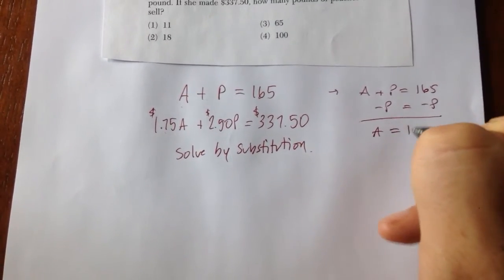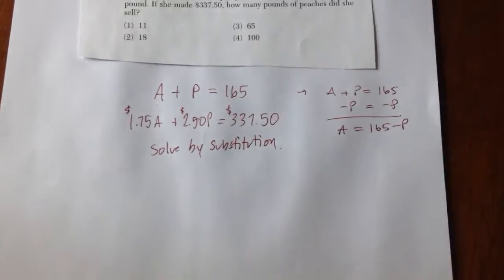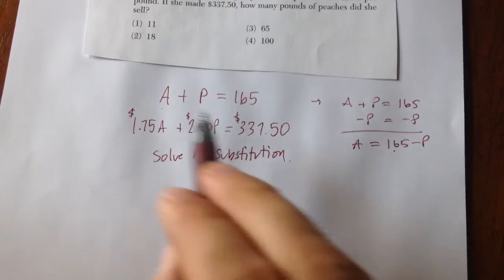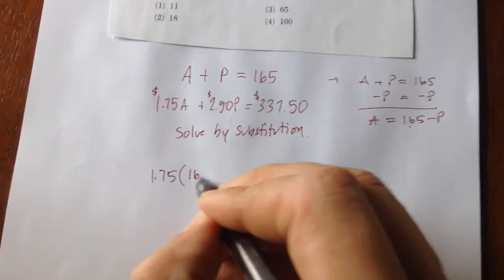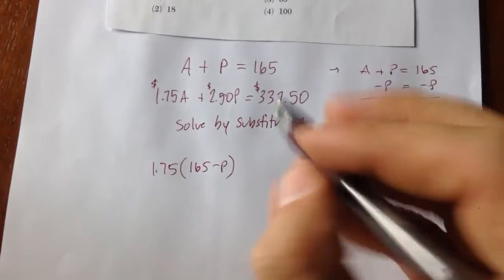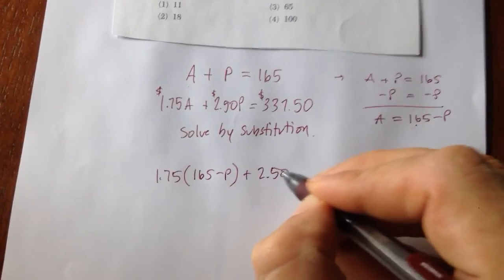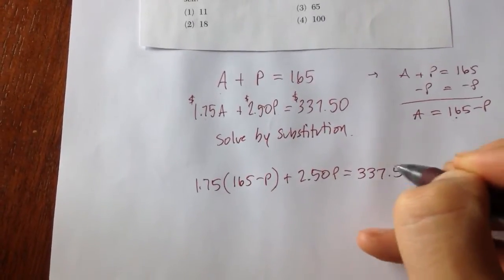So I get a equals 165 minus p, and then what I'm going to do is substitute this in for this a. You have 175 times 165 minus p plus 250p equals 33750.